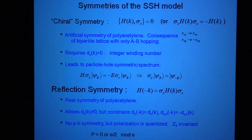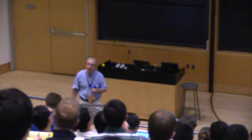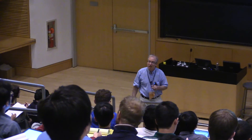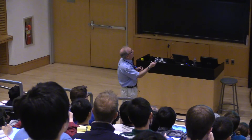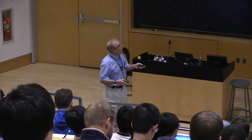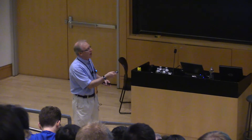For every state with energy E, there's a partner with energy minus E. So is this consistent with the topological classification table? Because I thought for one dimension, if you have the spinless case and the particle-hole symmetry squares to plus one, then you have a trivial classification — but then you're showing a Z2 classification? No, it's Z. It's the integer winding number. So in the Su-Schrieffer-Heeger model, we have two different winding numbers: a winding number of zero and a winding number of one.